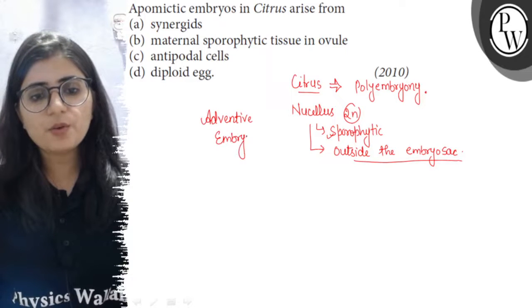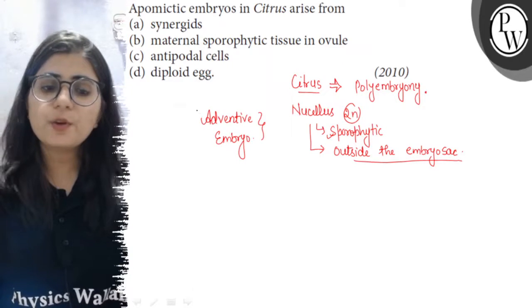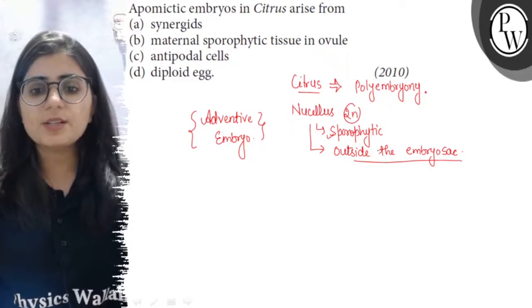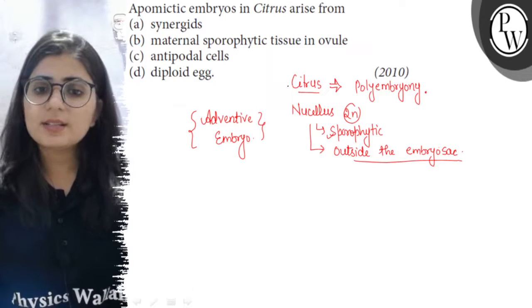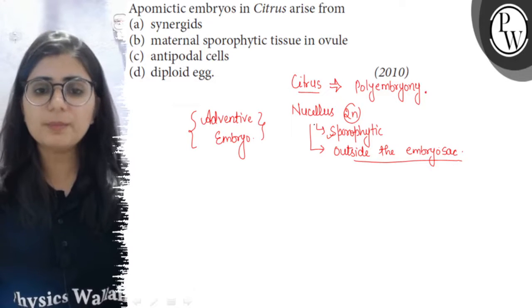It means the formation of embryo from the sporophytic cells which are present outside the embryo sac, and it is apomixis as the cells are not being fused with the male gamete.